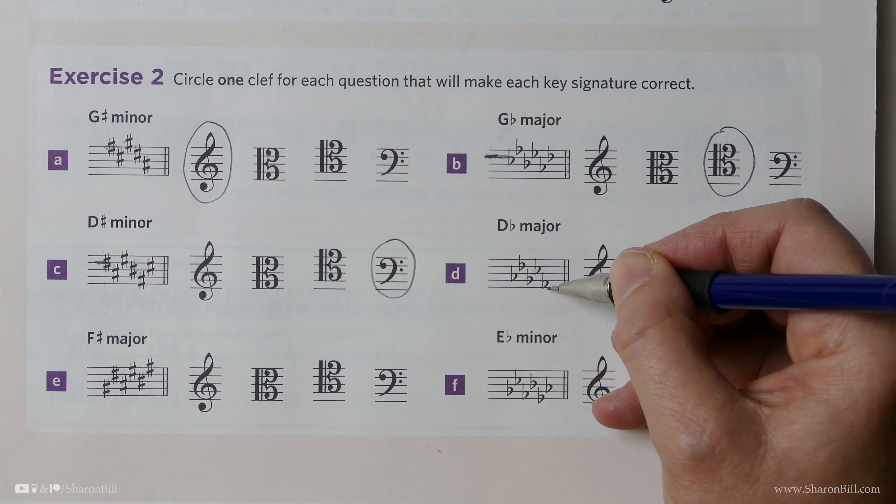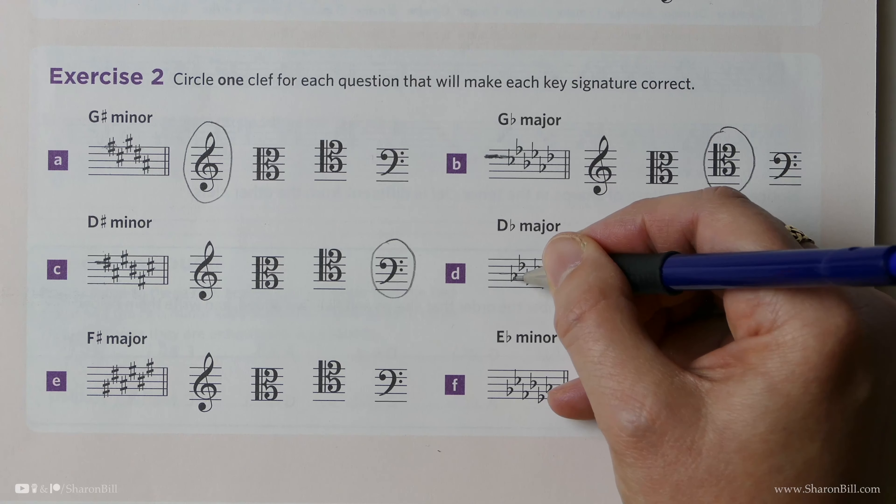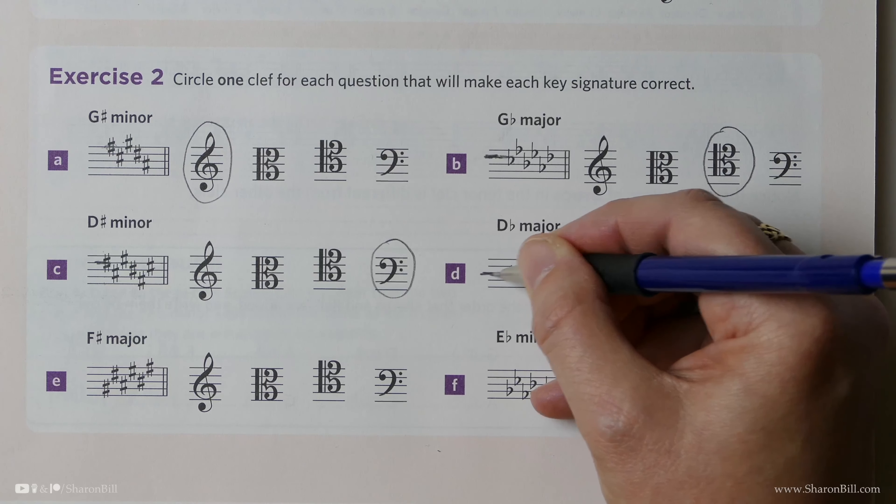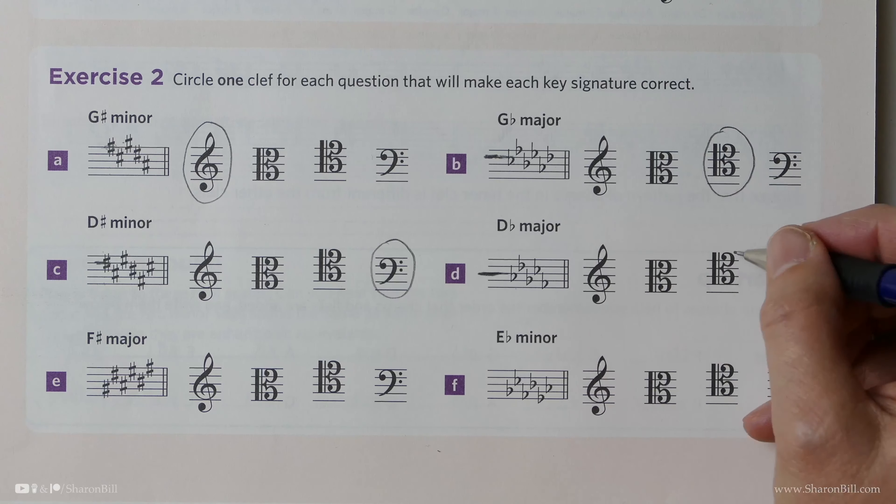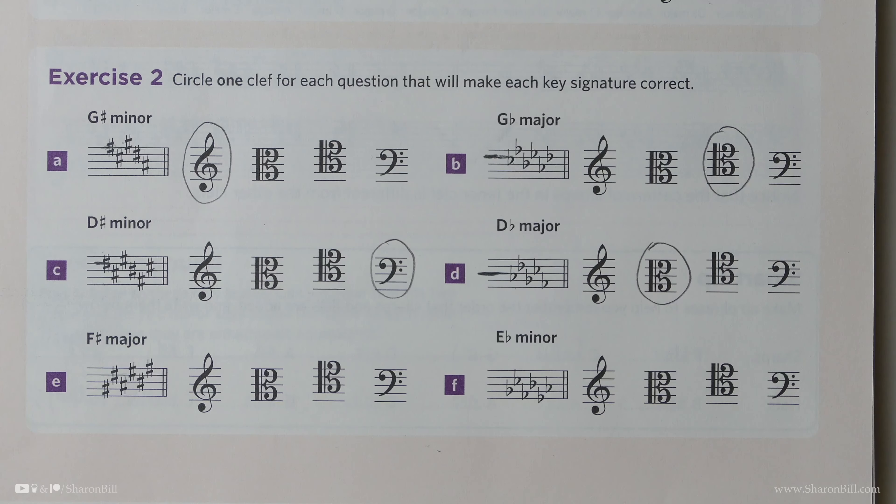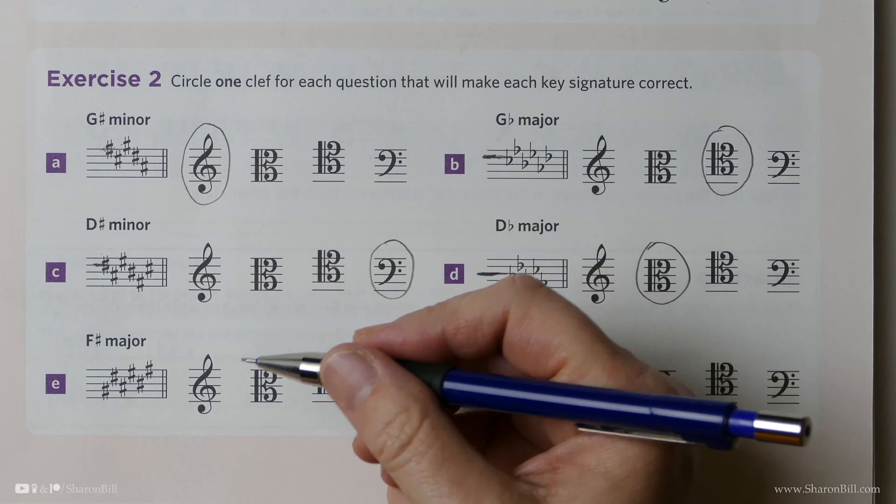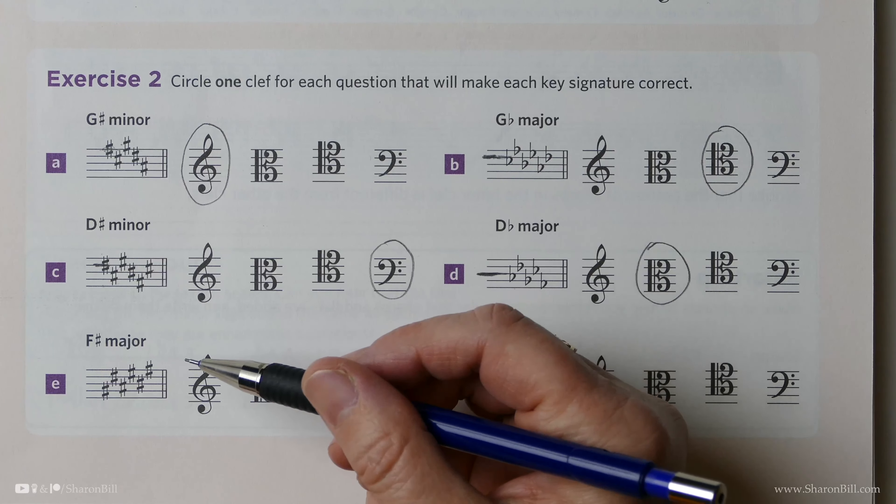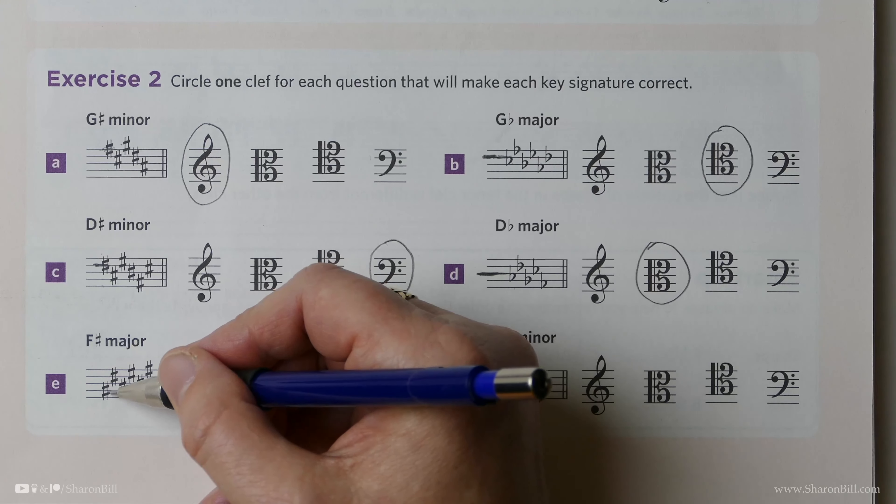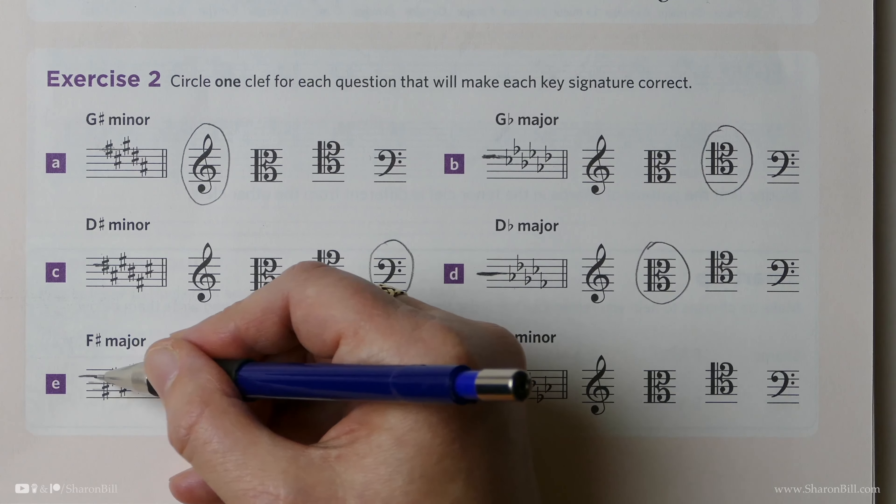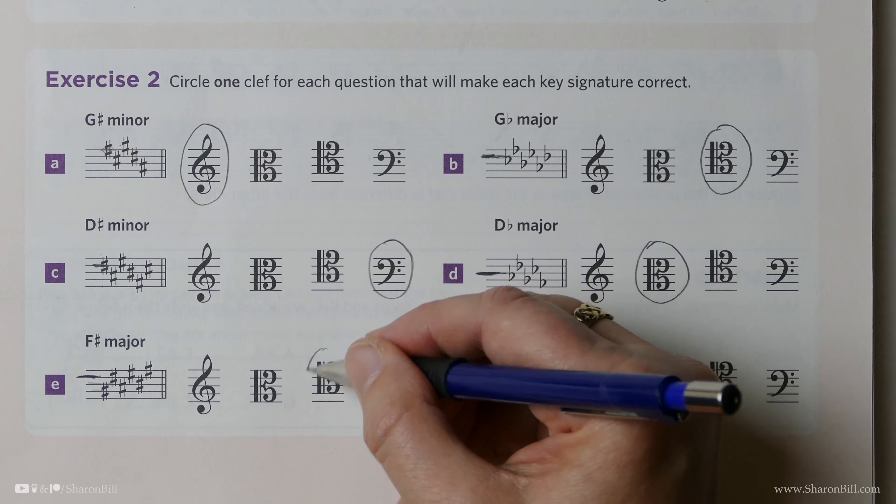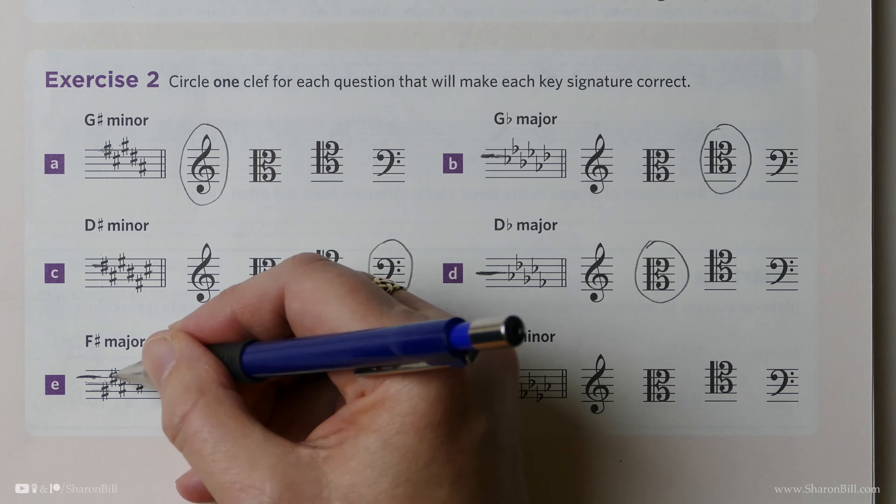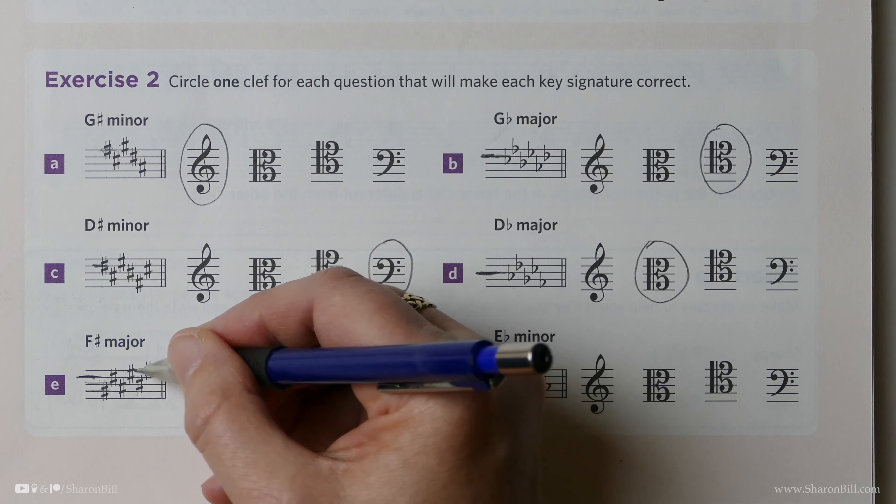D flat major has a key signature of B, E, A, D, G flat and so we know this first flat is always B and so if that is a B this must be C so for our clef to make this C it's got to be alto clef with the C being that middle line so it's got to be alto clef. Now then F sharp major has a key signature of six sharps and of course the first sharp has got to be F sharp so for this to be an F so let's think F, G, A, B, C that makes this the C, and so that's got to be the tenor clef. So C, B, A, G, F sharp and then everything else, that's correct.